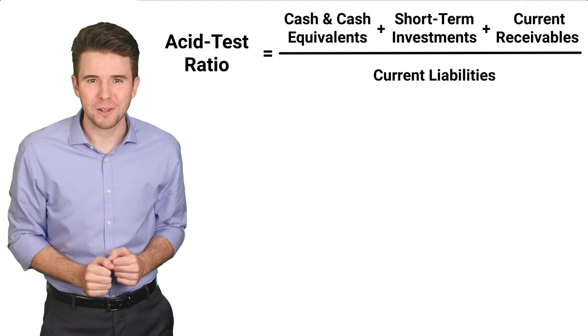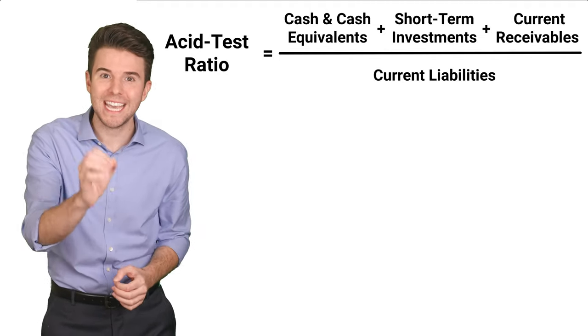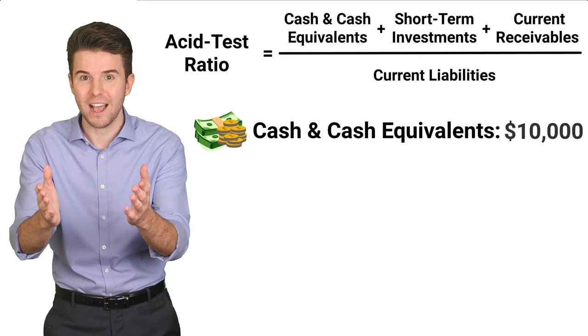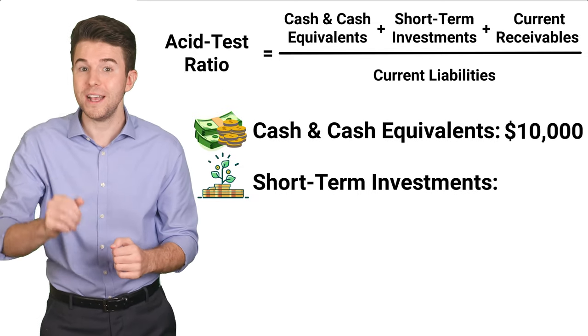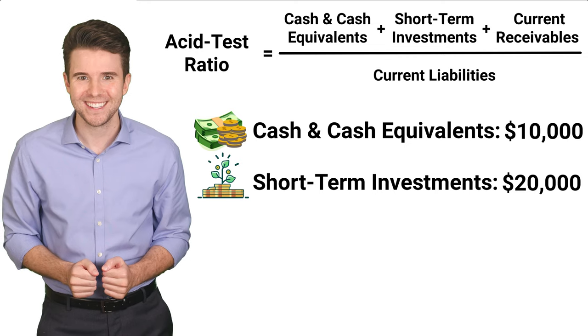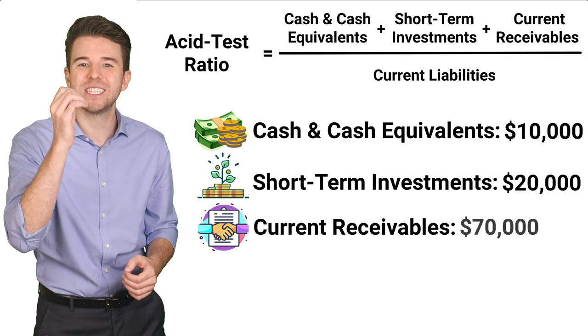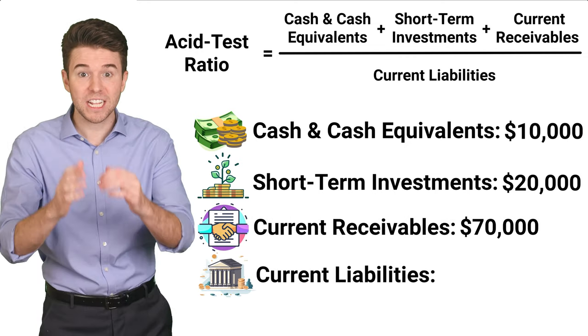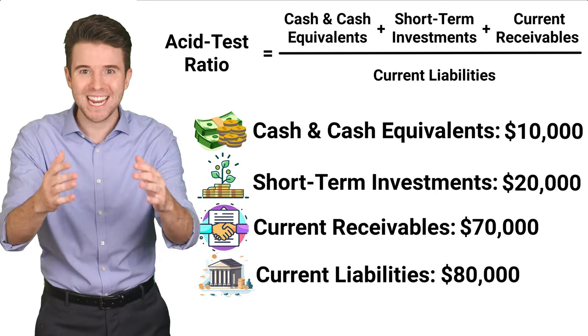Let's break this down with an example. Assume a company has cash and cash equivalents of 10,000, short-term investments of 20,000, current receivables of 70,000, and current liabilities of 80,000.